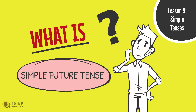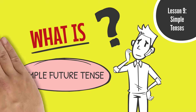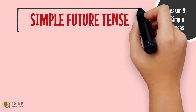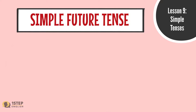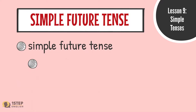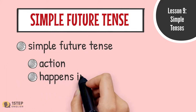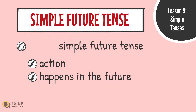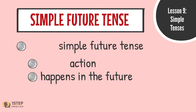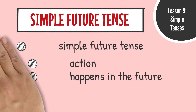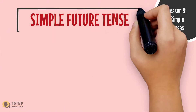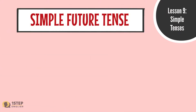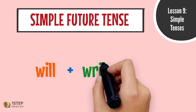What is a simple future tense? The simple future tense is used to describe an action that happens in the future. The formula for the simple future tense is: will + root form of the verb.